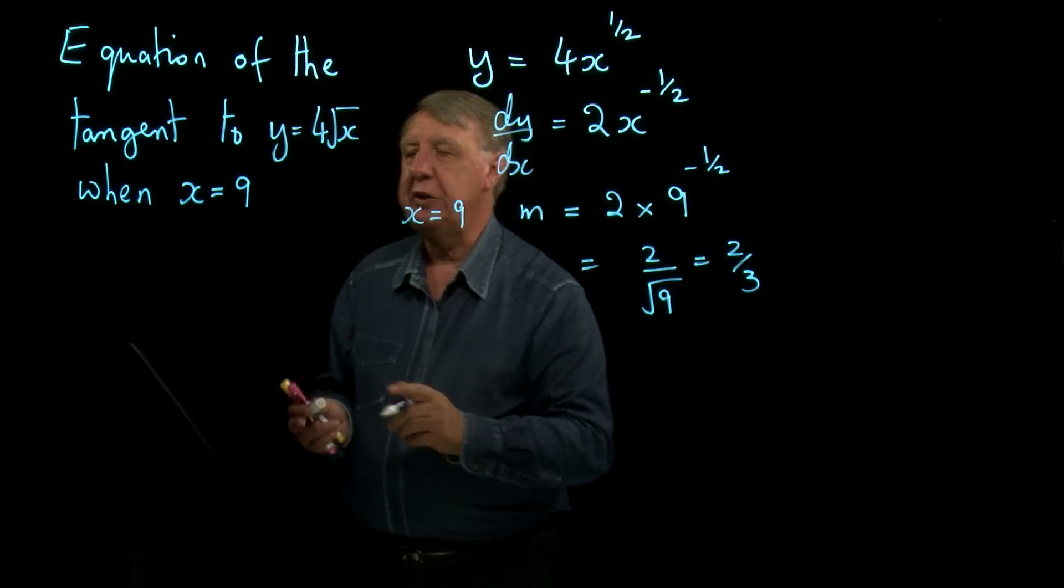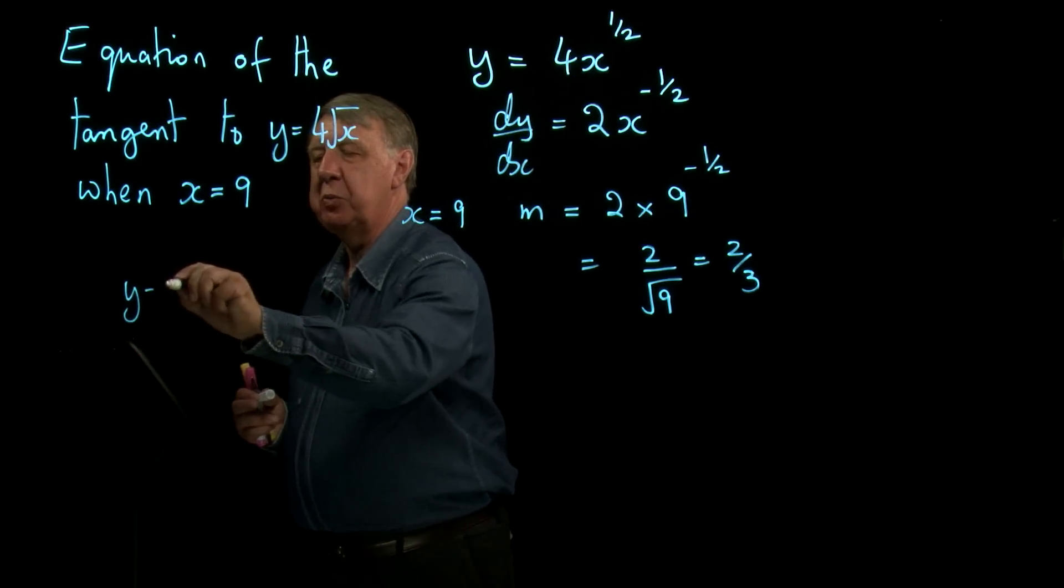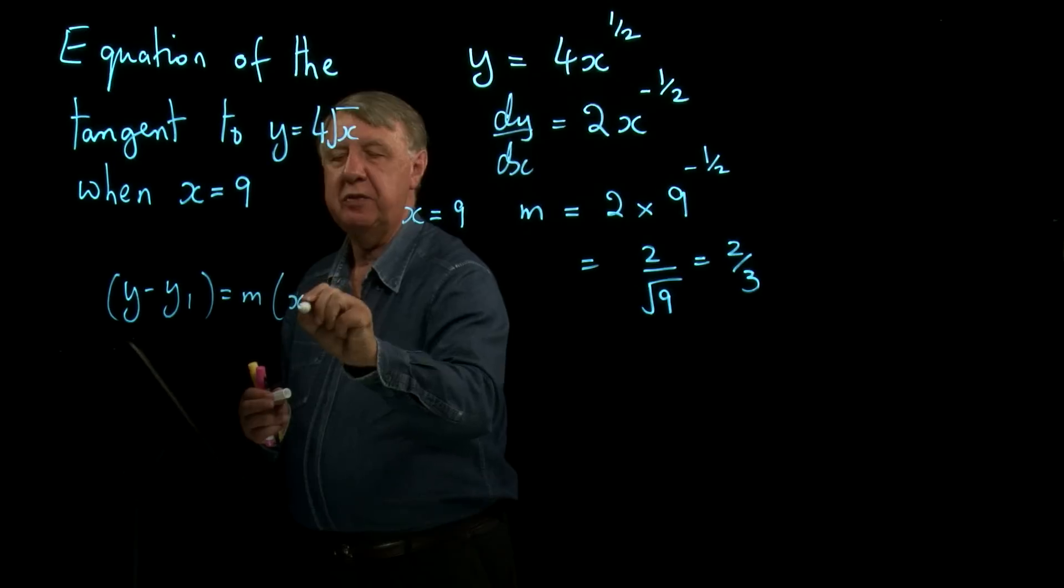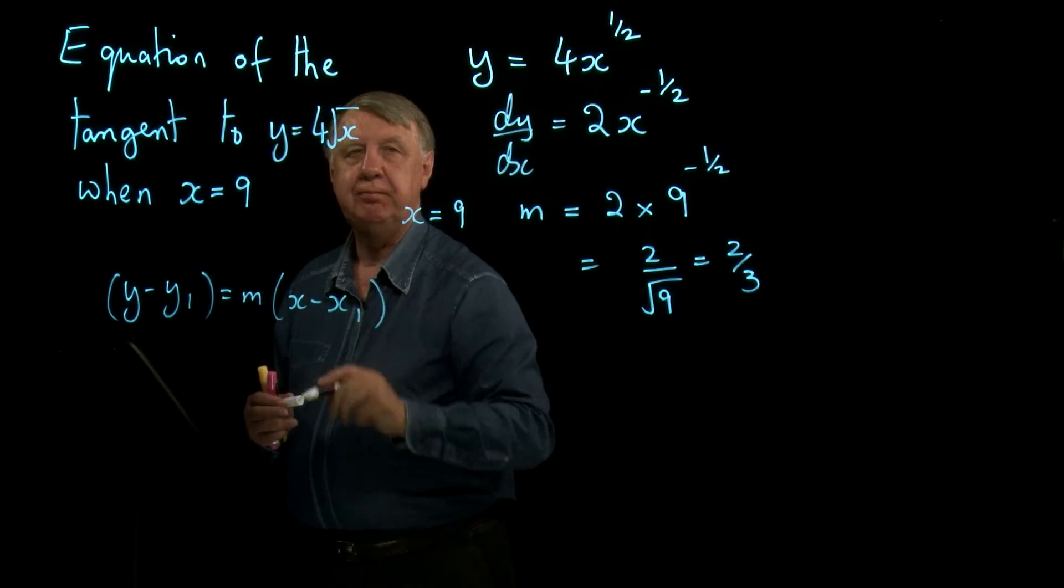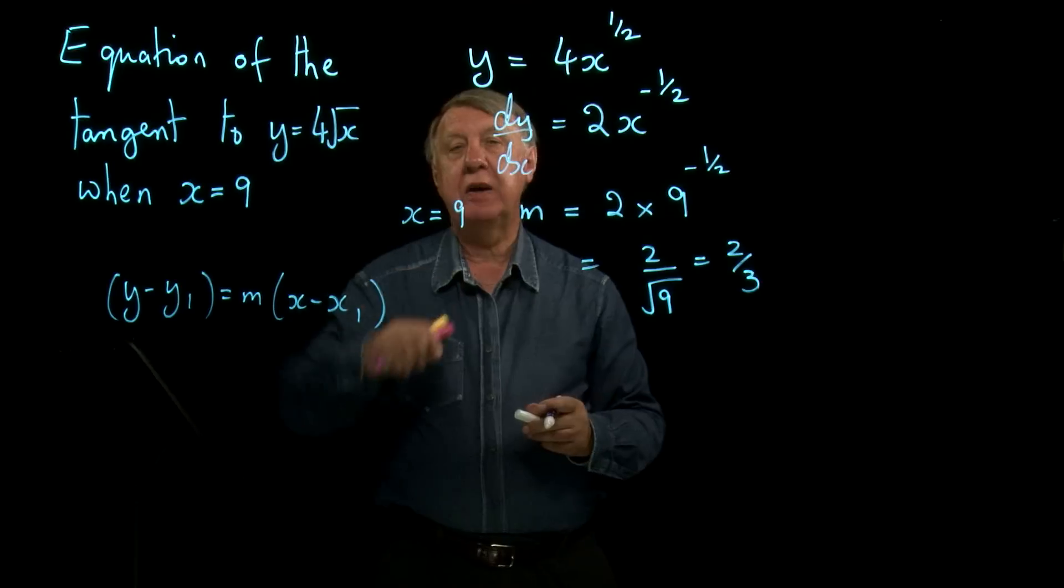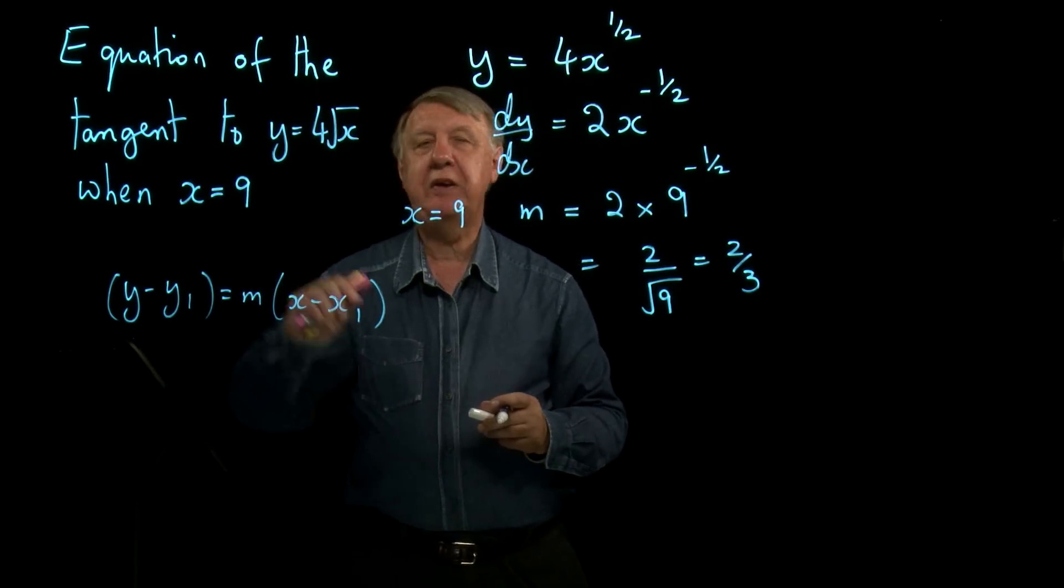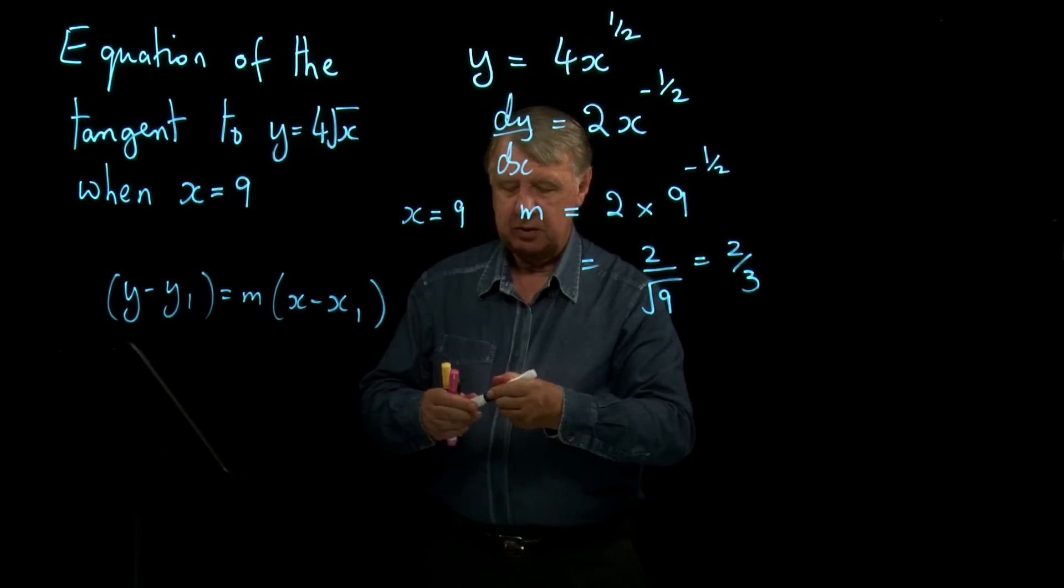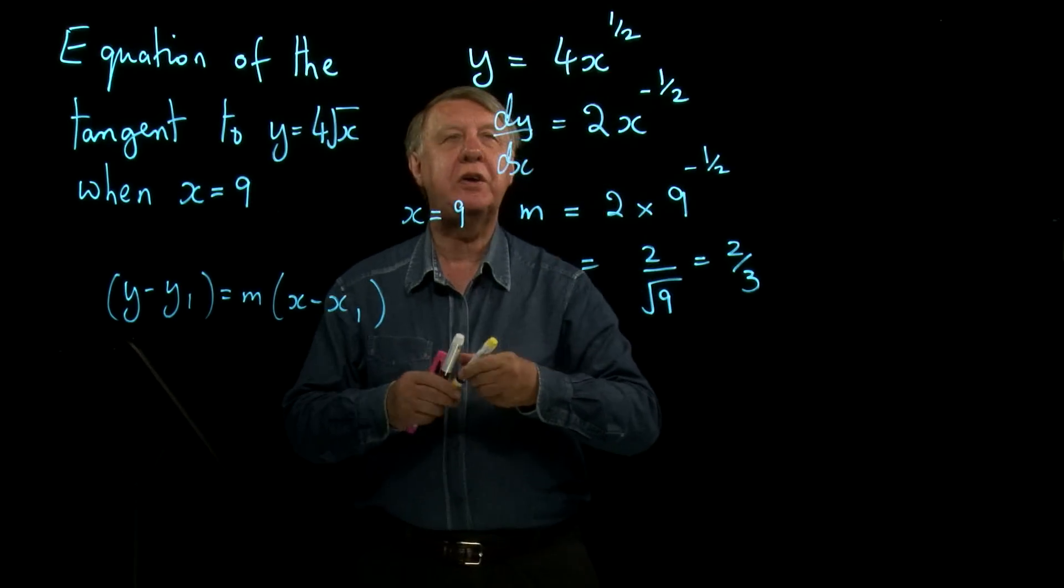Now I'm going to use my old friend y minus y1 equals m times x minus x1. I know what x1 is—it's nine—so I need to work out what y1 is, and we go back to the equation of the graph.